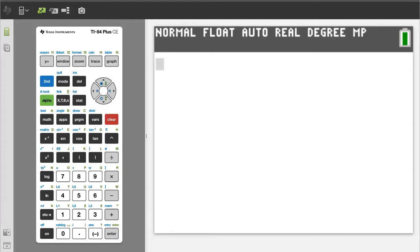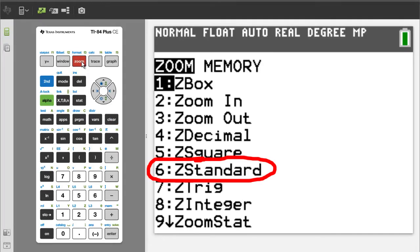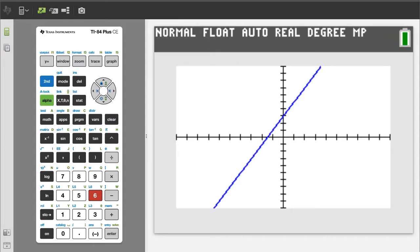Now we want to set a standard graphing window. Press the zoom button. We want Z standard, number 6, so press the 6 button. This gives us 10 tick marks here, here, here, and here. The distance between each tick mark is 1. This blue line is a graph of a line from a previous problem. We will delete that equation next.